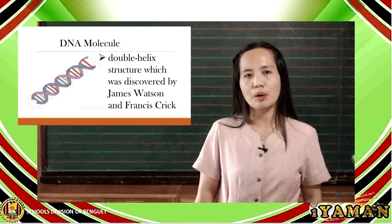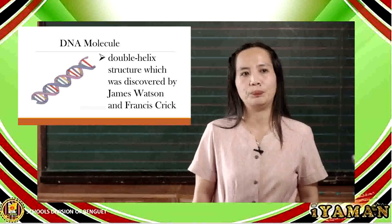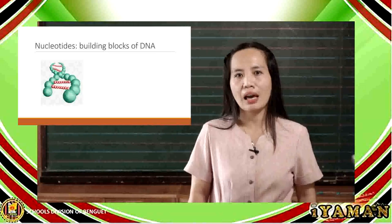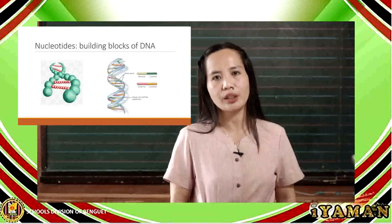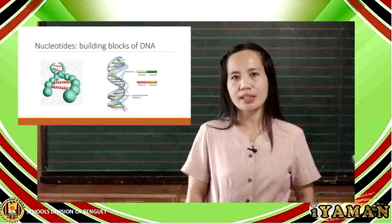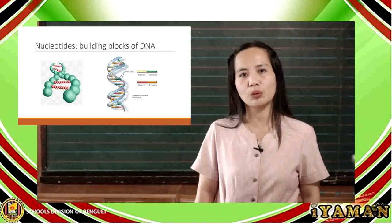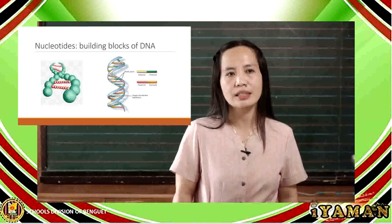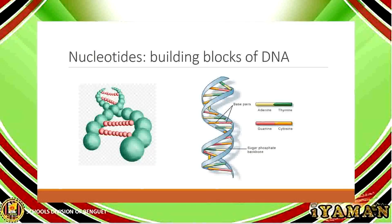But what makes up a DNA molecule? If we try to compare, the DNA is like a house. A house is made up of hollow blocks or bricks, and these bricks represent the building blocks of the DNA, which we call nucleotides. Each nucleotide is made up of three components. First, a sugar called deoxyribose, which is a pentose or five-carbon sugar.